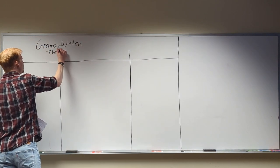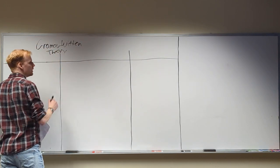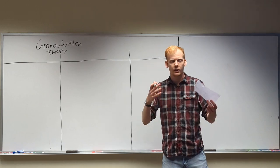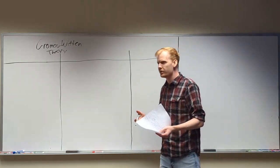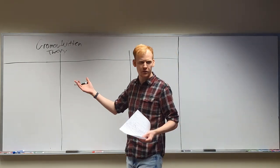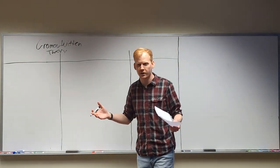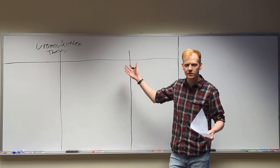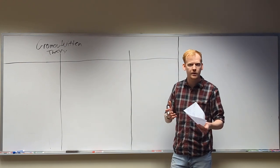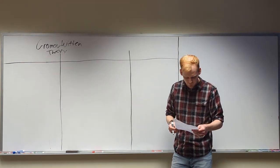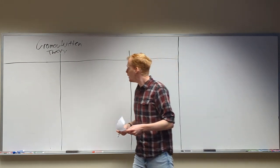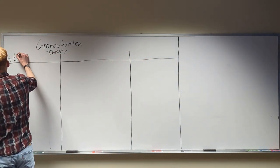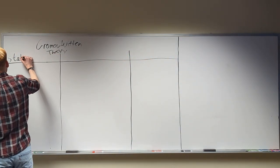Whenever you hear the words Gromov-Witten theory, you think it has some loose connections to physics, especially string theory. There are objects out there in string theory that are extra-dimensional and they want to study them, and it often becomes a geometry problem. In Gromov-Witten theory, they usually study stable curves.